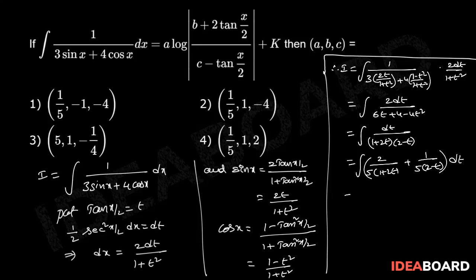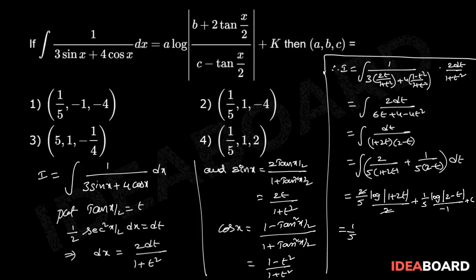Integrating, that equals 2 by 5 into log of modulus of 1 plus 2t divided by 2, plus 1 by 5 into log of modulus of 2 minus t divided by minus 1, plus c. The 2s cancel, and using log a minus log b equals log(a/b), this simplifies to 1 by 5 into log of modulus of 1 plus 2t by 2 minus t plus c.